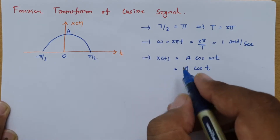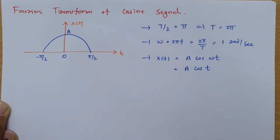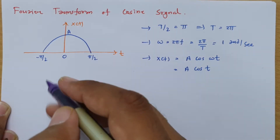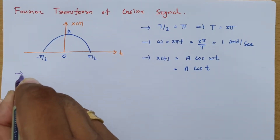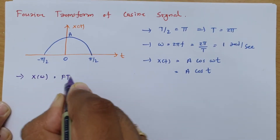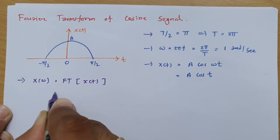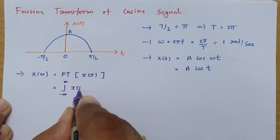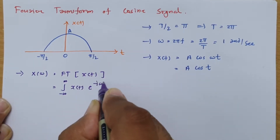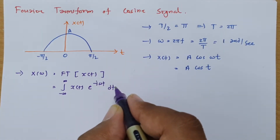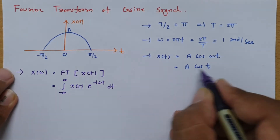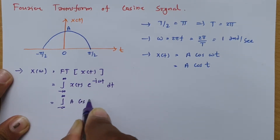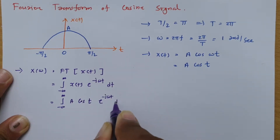So now we will calculate the Fourier transform of A·cos(t). The Fourier transform X(ω) is defined as the integral from minus infinity to infinity of x(t)·e^(−jωt) dt. Placing x(t) = A·cos(t), we get the integral from minus infinity to infinity of A·cos(t)·e^(−jωt) dt.